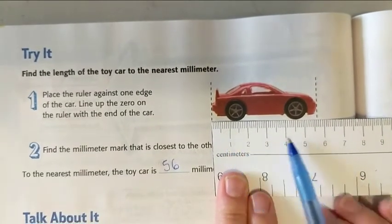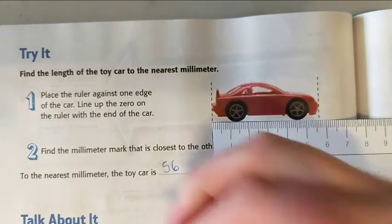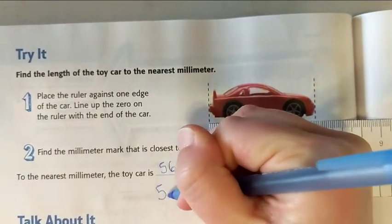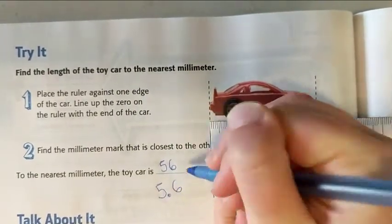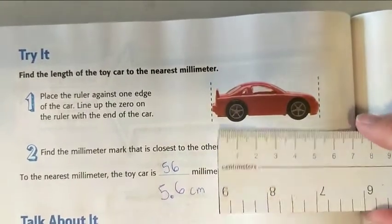If they ask for it in parts of a centimeter, a whole centimeter, I would say six centimeters. But if I wanted it as a decimal, I would say 5.6 or five and six-tenths centimeters. But they asked for millimeters, so it's 56 millimeters long.